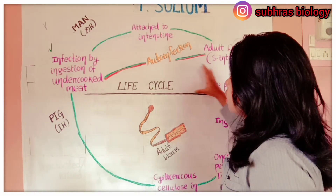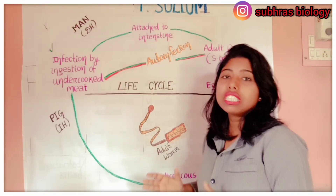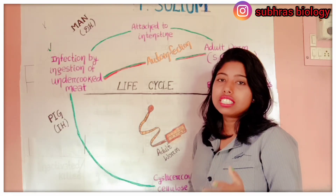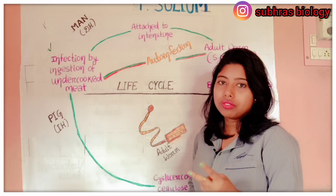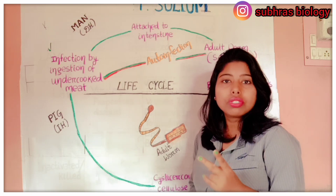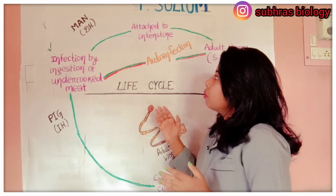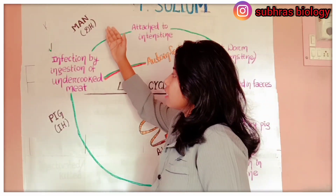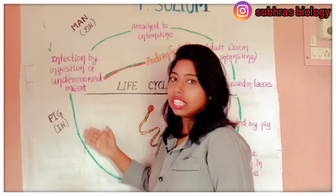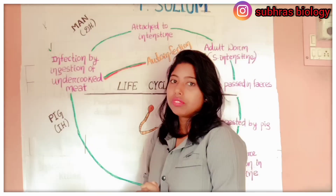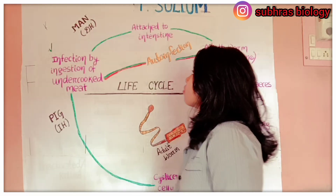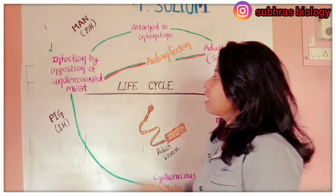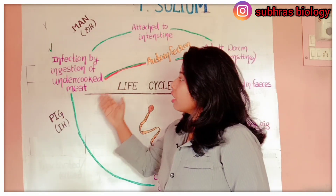As you know, Taenia solium is digenetic — meaning it has two hosts: a definitive host and an intermediate host. The definitive host is man, and the intermediate host is the pig. Now we will start the cycle.